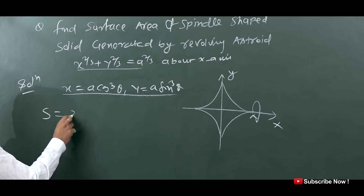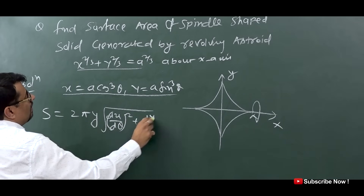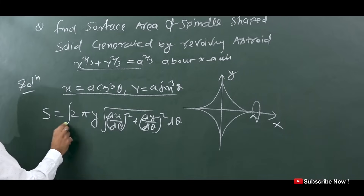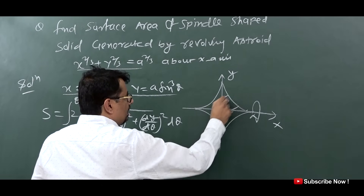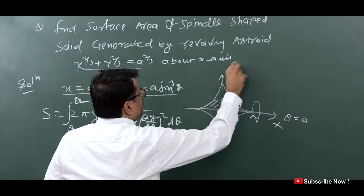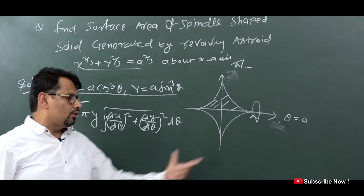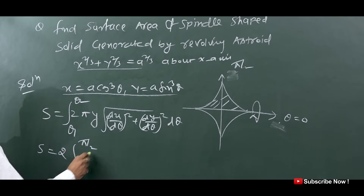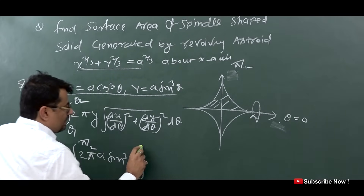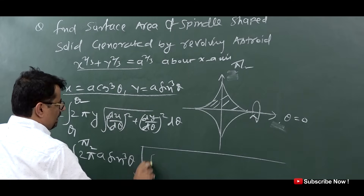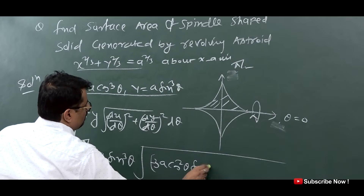The surface area formula becomes S = 2π ∫ y · √[(dx/dθ)² + (dy/dθ)²] dθ from θ₁ to θ₂. We take the upper half limit: θ goes from 0 to π/2, and we multiply by 2 (twice). So S = 2 × 2π ∫₀^(π/2) y dθ. Now dx/dθ: differentiating a·cos³θ gives −3a·cos²θ·sinθ, and squaring gives 9a²·cos⁴θ·sin²θ.